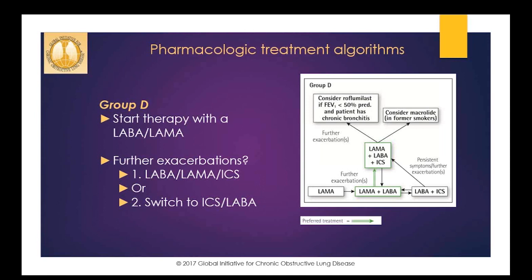Group D patients are at higher risk of developing pneumonia when receiving treatment with an ICS. In some patients, initial therapy with a LABA-ICS may be the first choice — specifically those with a history suggestive of asthma-COPD overlap syndrome, which is also covered in the 2017 guidelines update. High blood eosinophil counts may also support the use of ICS, although this is still under debate. For patients who develop further exacerbations on LABA-LAMA therapy, two alternative choices exist: escalate to a LABA-LAMA-ICS triple therapy, or switch to LABA-ICS.